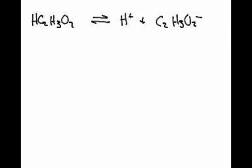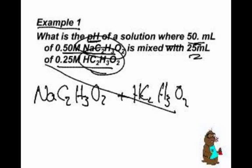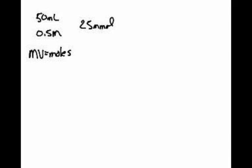Now, we do have an issue - we want to work with molarity units. I have 50 milliliters of 0.5 molar sodium acetate. So 50 times 0.5 is 25 millimoles. That's MV equals moles. I'm leaving it in millimoles, so I do not convert this to liters. I have 25 millimoles of the acetate.